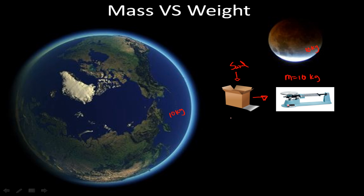If I was to go to the moon and take a measurement of this box, I would get 10 kilograms. If I was to go anywhere in the universe and take a measurement of this box to figure out its mass, I would get 10 kilograms no matter where I go. The difference between mass and weight is weight changes depending on the gravity of where I take the measurement. To find weight, we use the formula: weight equals mass times gravity. The gravity of Earth is 9.8 meters per second squared.